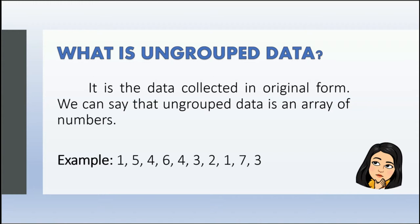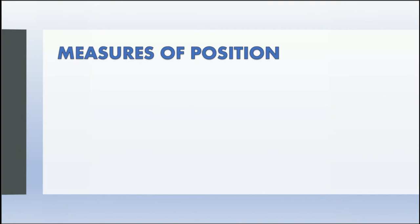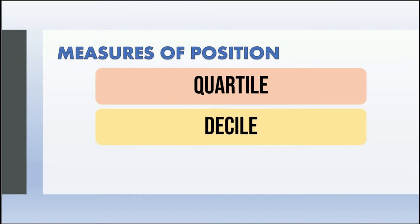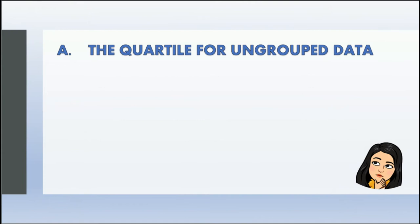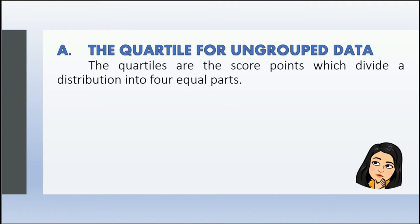For example, we have 1, 5, 4, 6, 4, 3, 2, 1, 7, and 3. Under measures of position, we have 3 types: the quartile, the decile, and the percentile.